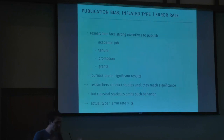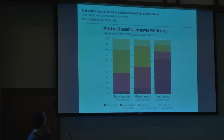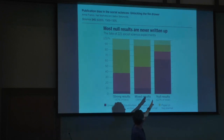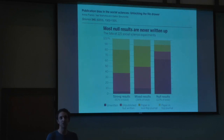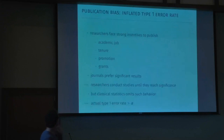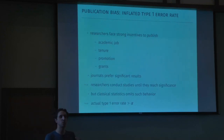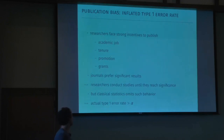If scientists want to publish and journals want significant results, scientists will do whatever they can to achieve significance — essentially conducting studies until they can reject the null. There's also evidence that studies in the social sciences finding null results never get written up; the vast majority are not even working papers. In classical statistics, you don't take this behavior into account. The critical values used — like 1.96 for a two-sided test at 5% — assume the researcher conducts one study and reports that one result, which is clearly not the case.